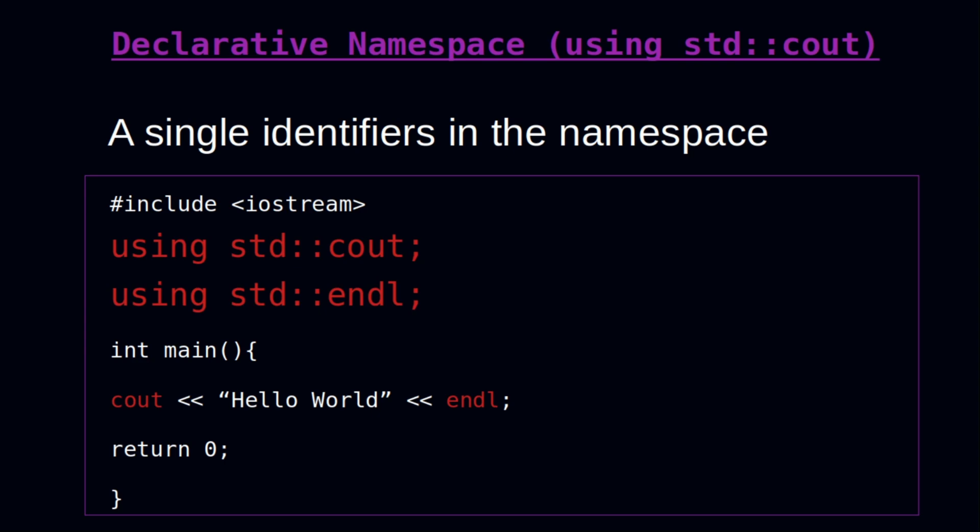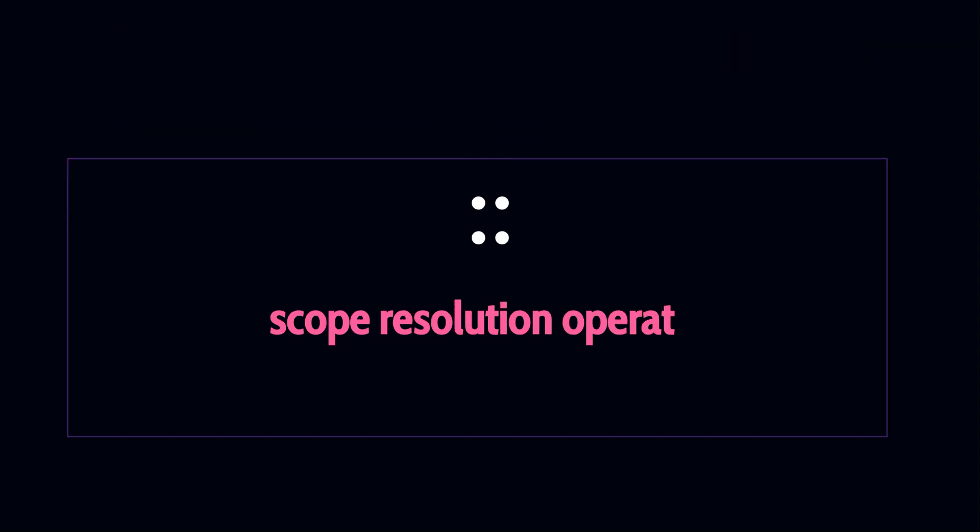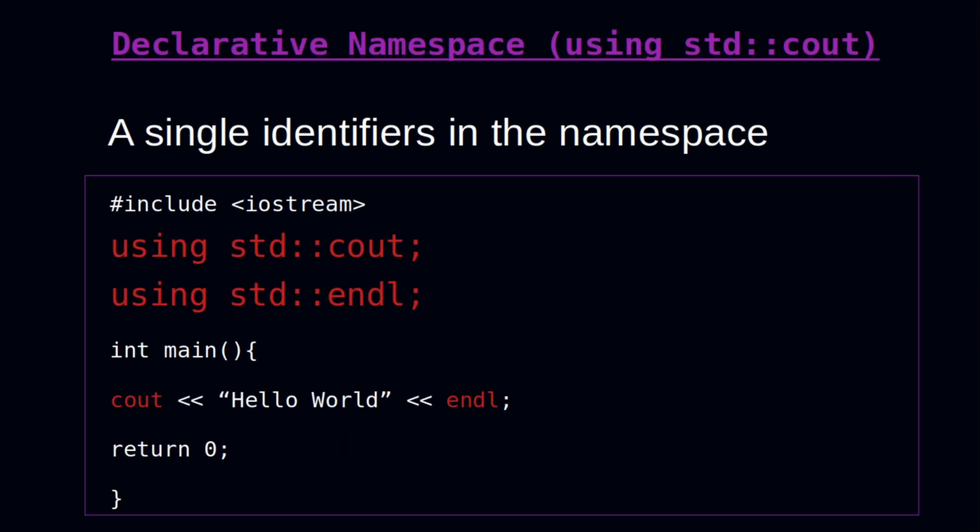With the declarative namespace, if you want to use a single entity in a namespace, you use the declarative form. It goes with the namespace name followed by the double colon, which is the scope resolution operator. Then you specify the function, class, or variable you want to use from that namespace.